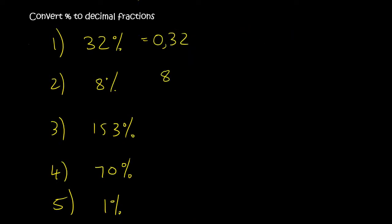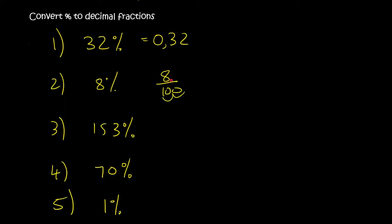8%: step one, 8 over 100. Then there are two decimal places, so that's two places. The decimal is currently over here, so you move it 1, 2, and then you put your comma. So it's going to be comma, then there's an open space, then there's the 8. In the open space you put a zero, and then if there's nothing in the front, you also put a zero. So the answer is 0,08.